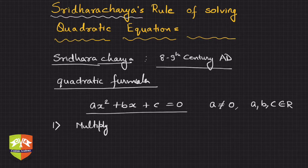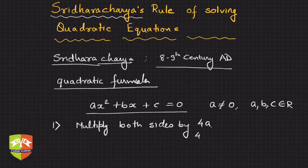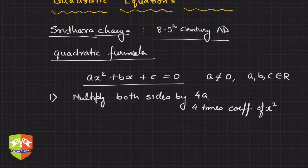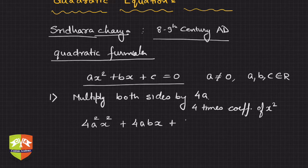Step number one: multiply both sides by 4a — that is, 4 times the coefficient of x². In this case the coefficient is 'a', so we multiply by 4a, and we get 4a²x² + 4abx + 4ac = 0.